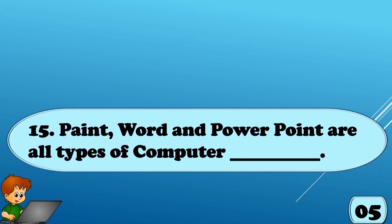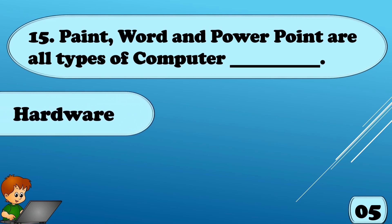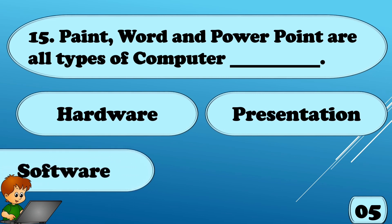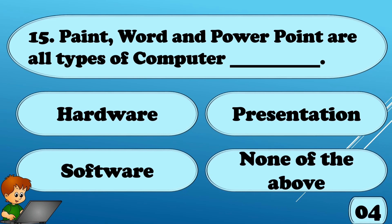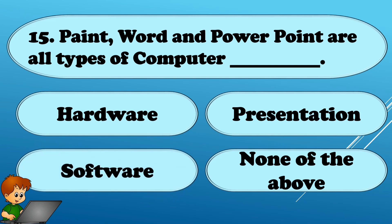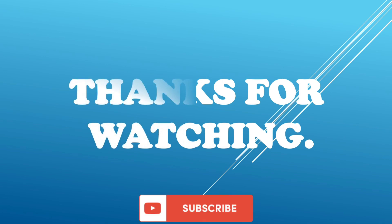Paint, Word and PowerPoint are all types of computer what? Options are A. Hardware, B. Presentation, C. Software, or D. None of the above. The answer is Software.